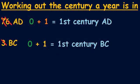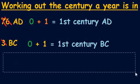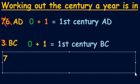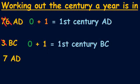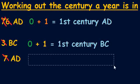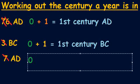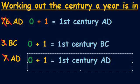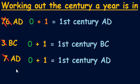For example, if we took the year 7 AD, we would do the same exact thing: cross off the 7, which leaves us with 0. We then add 1 to that, and that tells us it's in the first century AD. That's how you work out what century a year is in. Now I'm going to give you some examples to work out yourself.